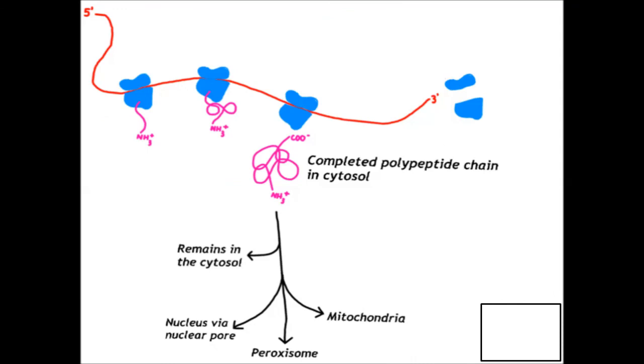This is the full process of transcription, where the completed polypeptide chain in cytosol is divided. First it is divided into the cytosol, and next in the mitochondria, peroxisome, and nucleus with the help of the nuclear pore. This is the entire process in the cytosol and in the Golgi body and endoplasmic reticulum, which we will learn in the next video.